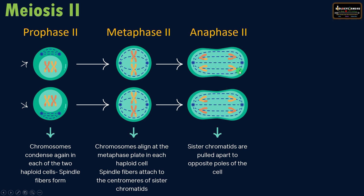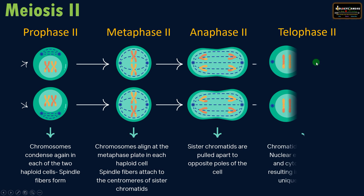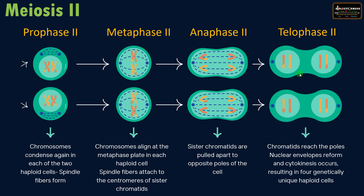The next stage is anaphase two, where sister chromatids are pulled apart to the opposite poles of the cell by the activity of spindle fibers. The final phase is telophase two, where chromatids reach the poles, the nuclear envelope reforms, and cytokinesis occurs, resulting in the formation of four genetically distinct haploid cells.